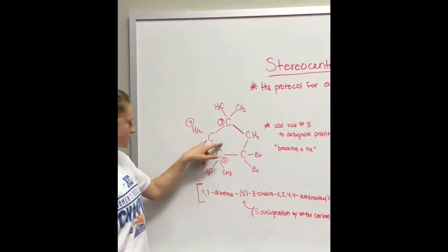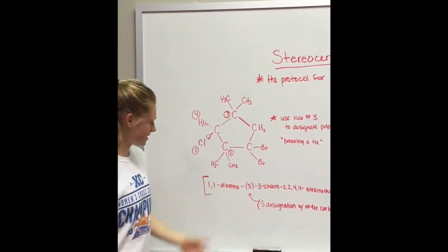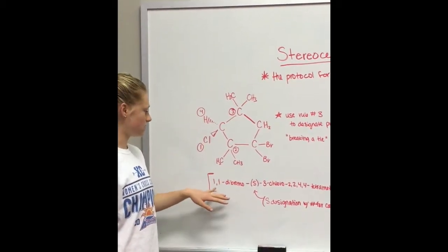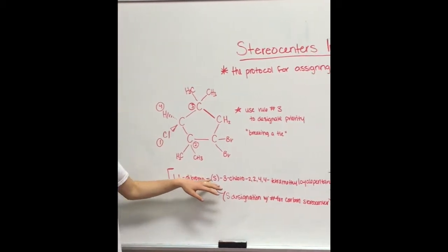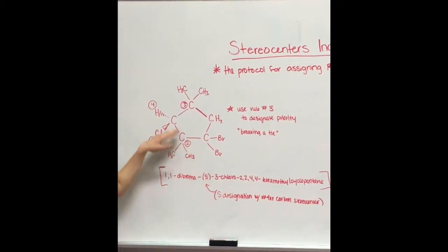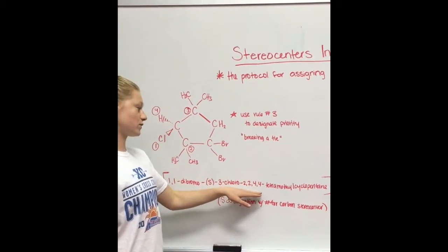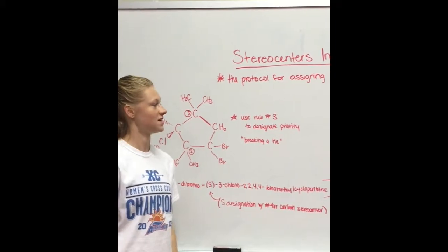On the stereocenter, we figure out that it's an S designation. So when naming the ring, you get 1,1-dibromo-S, next to the 3-chloro with the carbon that the stereocenter is attached to, 2,2,4,4-tetramethylcyclopentane.